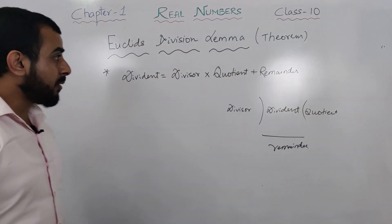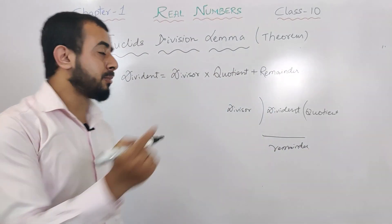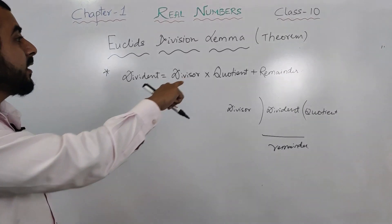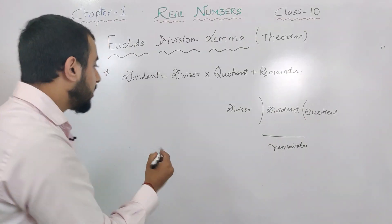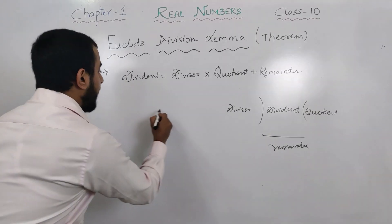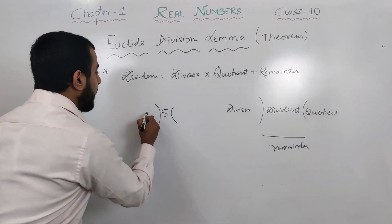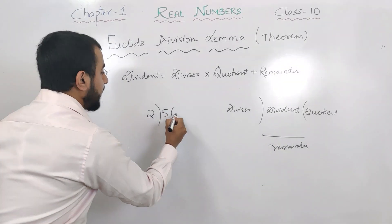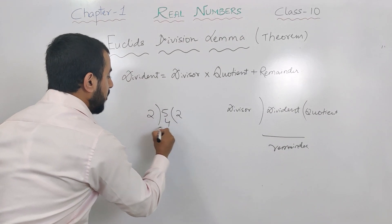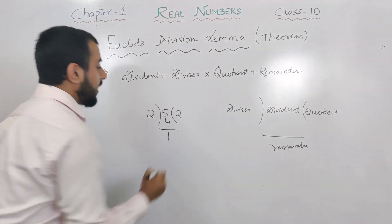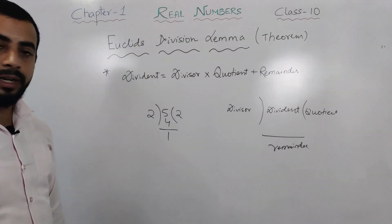Let's take an example so you can understand the formula. Take the example: 5 divided — 2 times 2 is 4, and the remainder is 1.